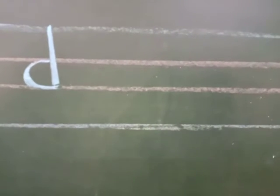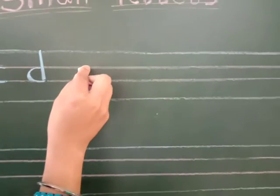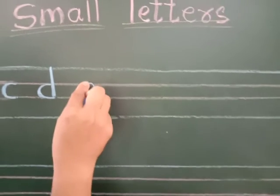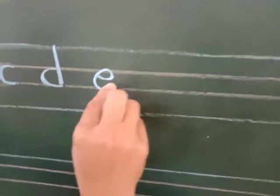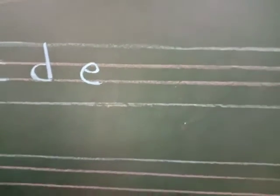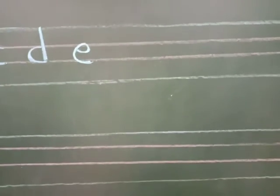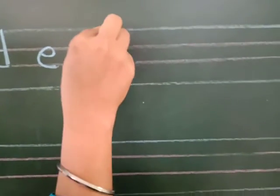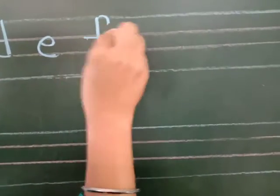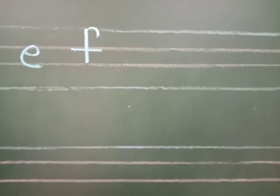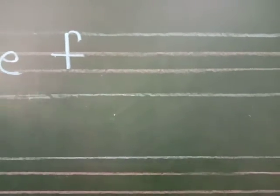Small e — curve. How you have to write? Curve line. Small e. Small f: standing line, curve line, and then a sleeping line. Small f. Here I have written small f in the upside three lines.